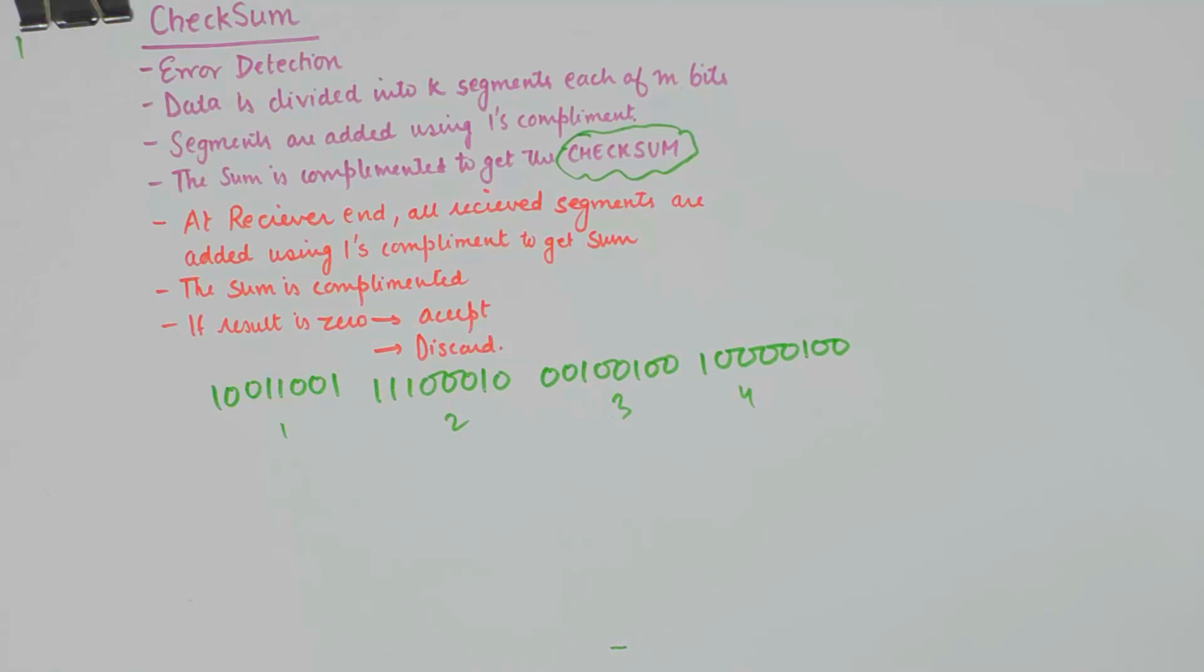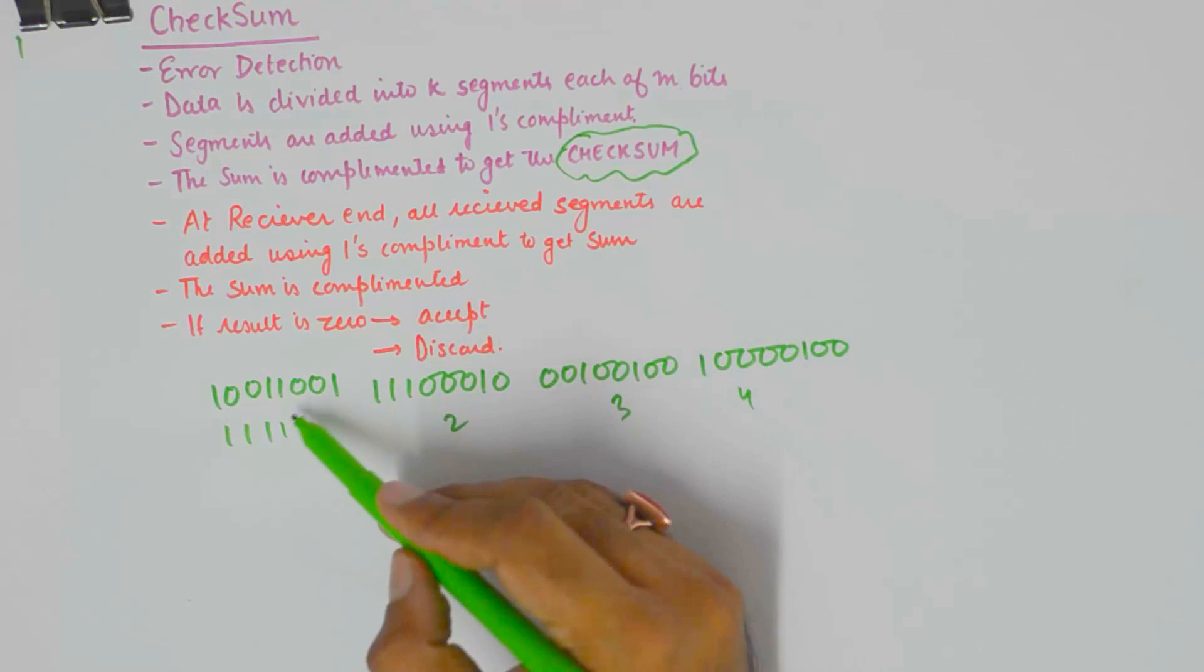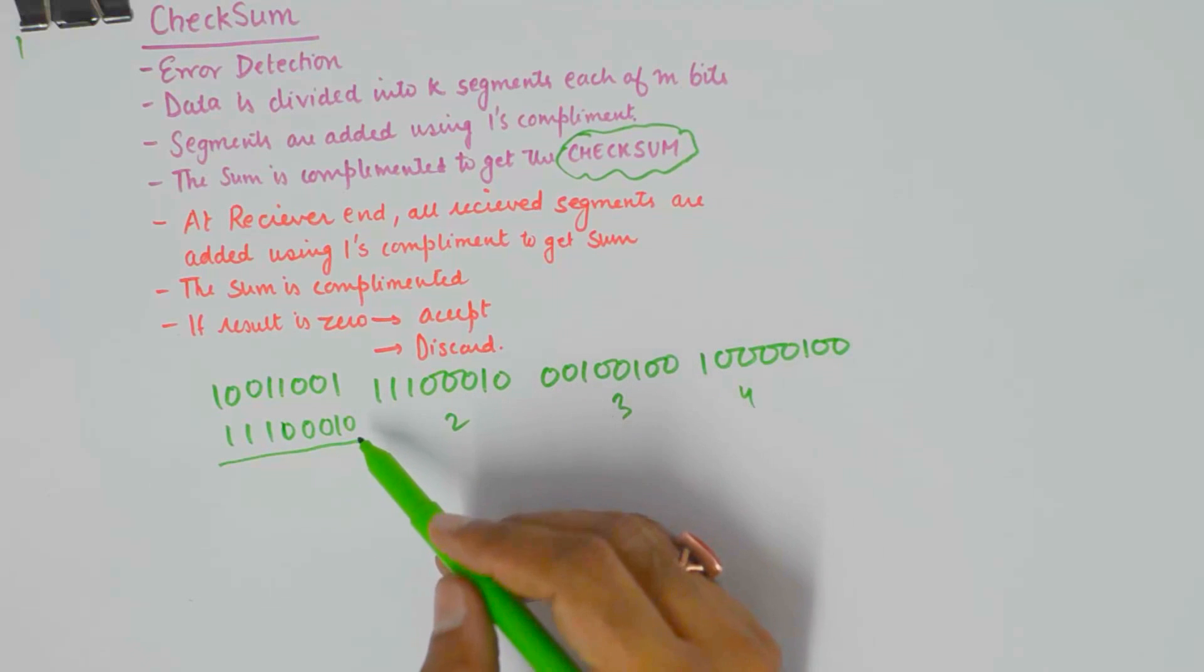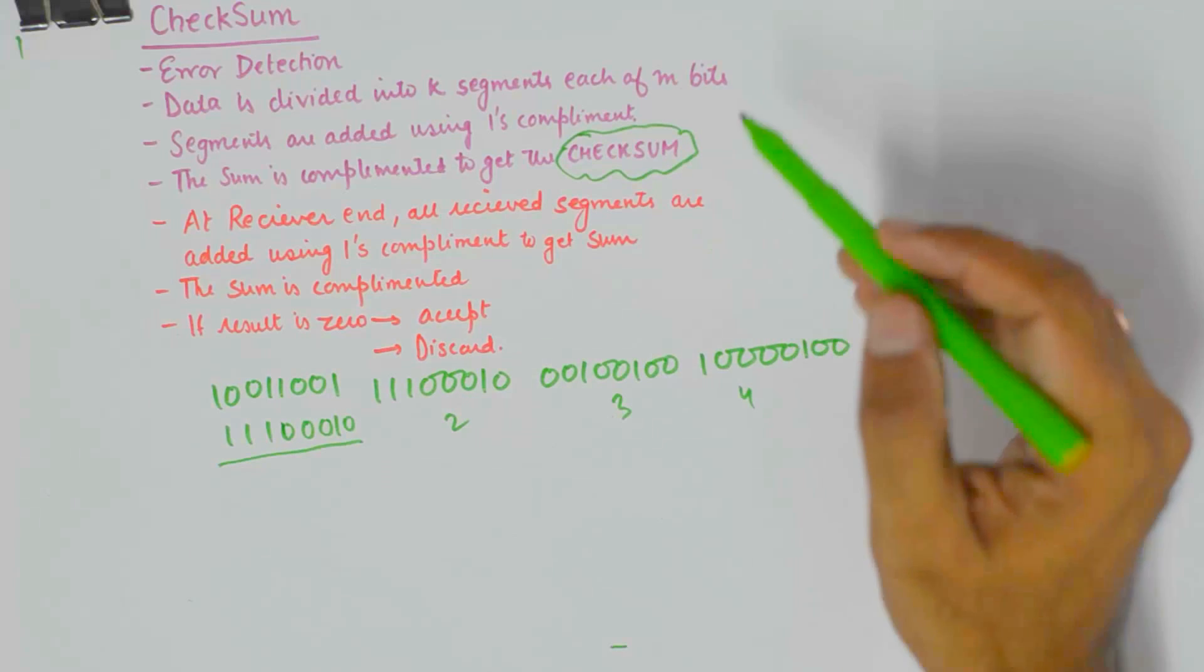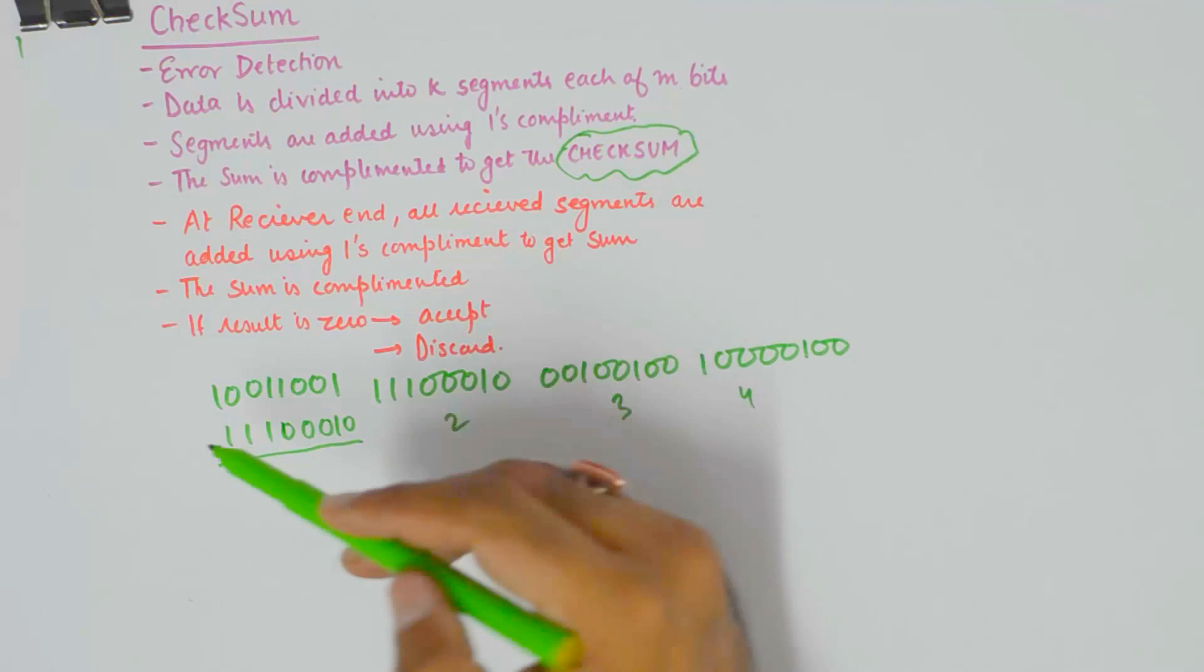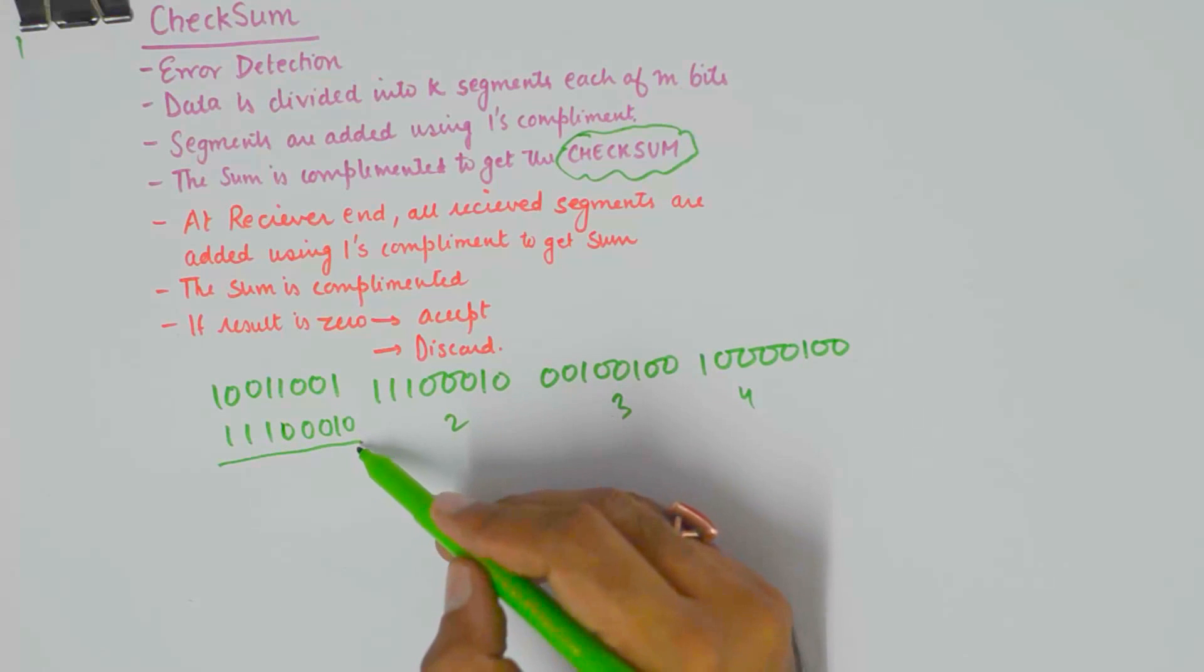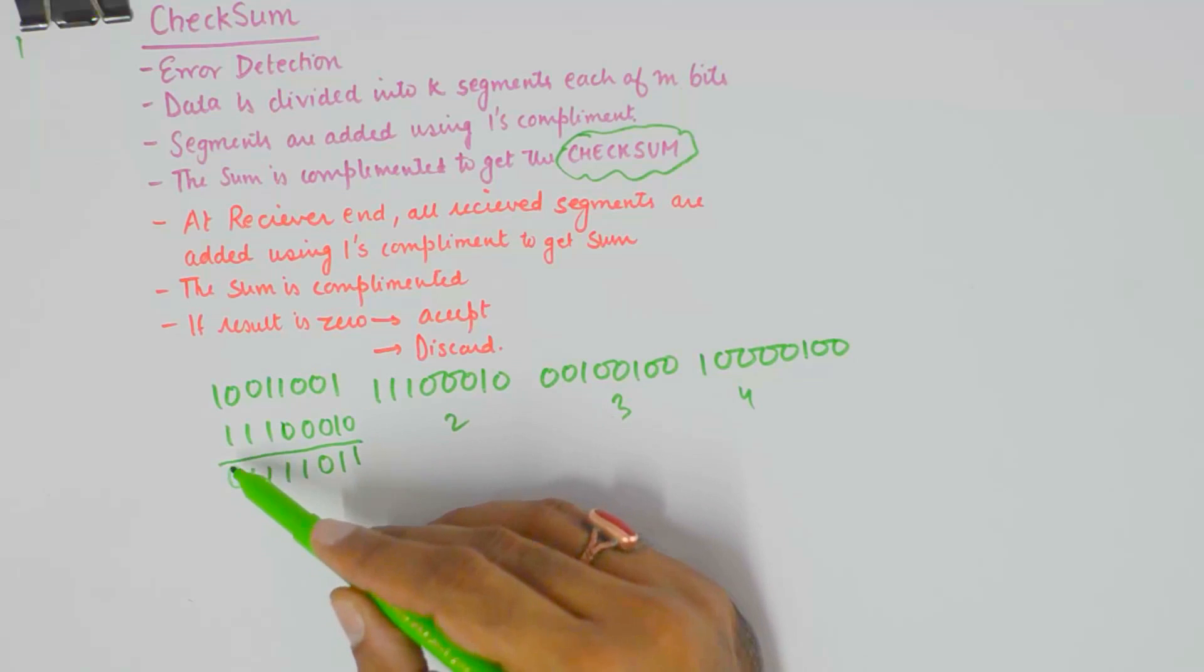In the first step we will add 1 and 2. So I will add the second byte here. Now, if you see, we need to add these 2 segments using 1's complement. In other words, if a carry is received, then we need to add that carry to the sum because the sum is going to be this with a carry.